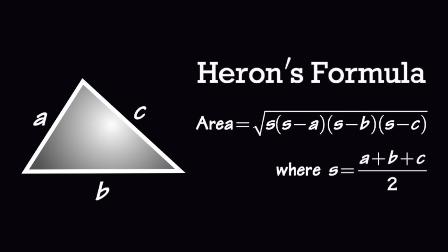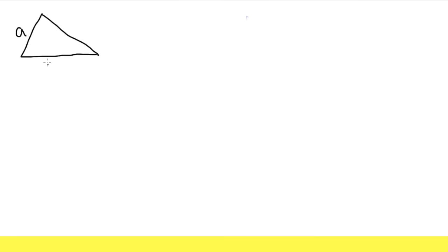Here we'll prove Heron's formula. First, let's begin with a triangle — I'll draw it right here and call the vertices A, B, and C. Remember, the area of the triangle is just 1/2 base times height. Let me take this side as the base and mark the height here. Let's say this part is B1 and here is B2.